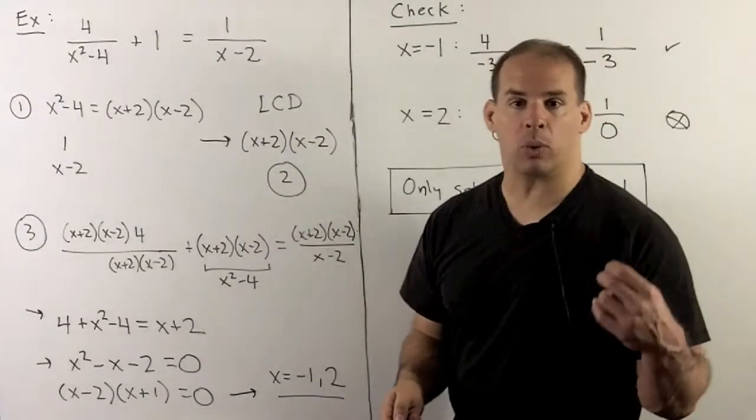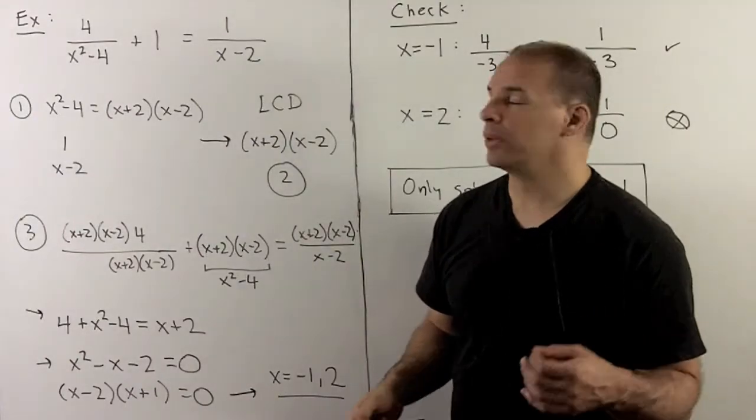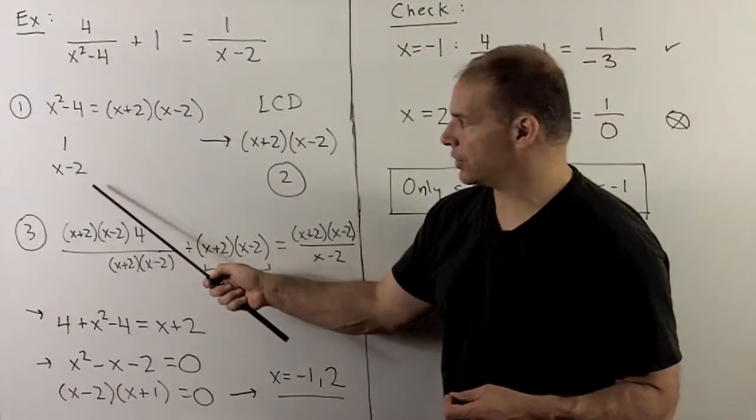Second term is 1 over 1, so the denominator is 1. Third term, we're going to have x minus 2.